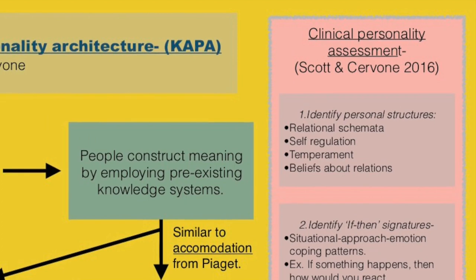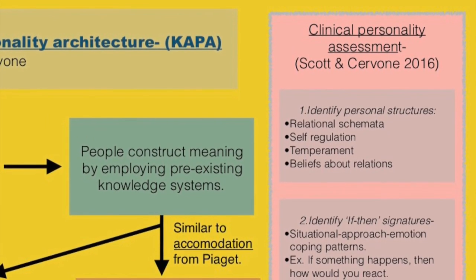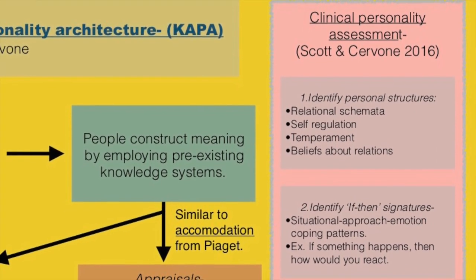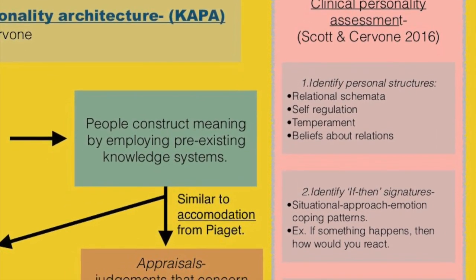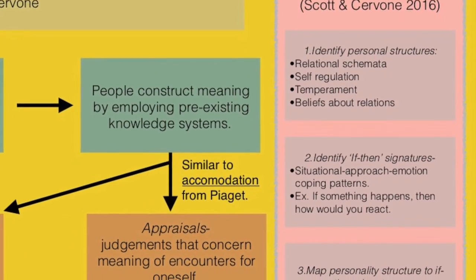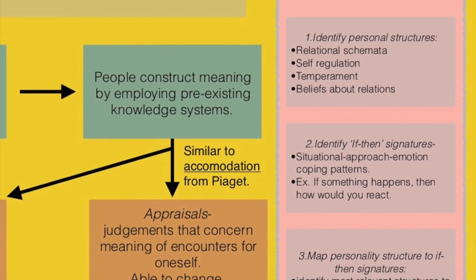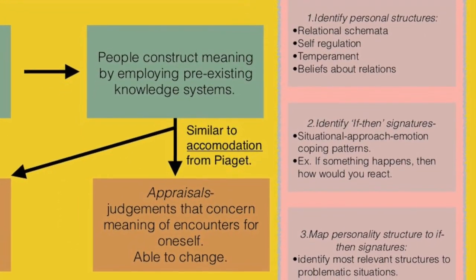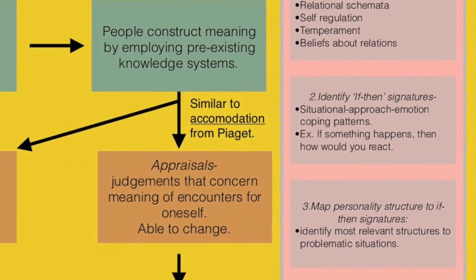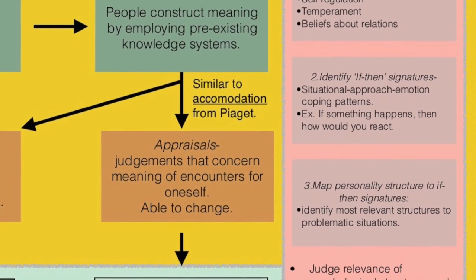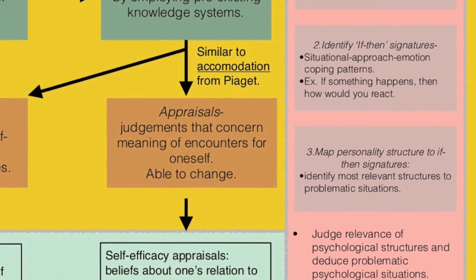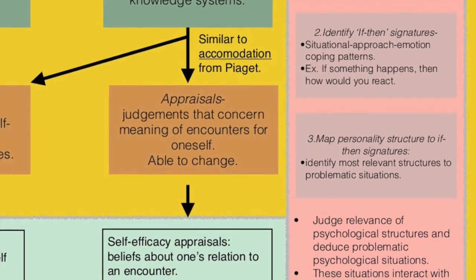Scott and Savone in 2016 developed a clinical personality assessment based on CAPA theory. These include three major points: number one, to identify personal structures, which are relational schemata, self-regulation, temperament, and beliefs about relations; number two, to identify if-then signatures, which are the situational approach, emotion, and coping patterns — for example, if something happens, then how would someone react to it; and number three, to map personality structures of the if-then signatures by identifying the most relevant structures to problematic situations.